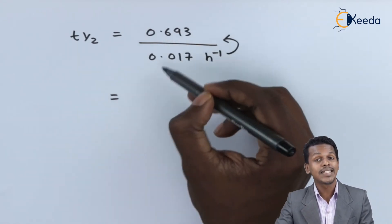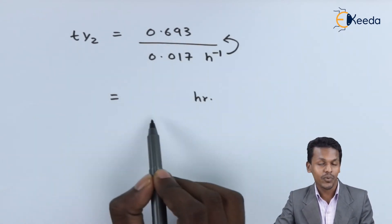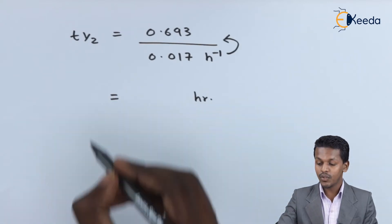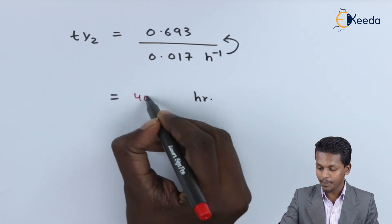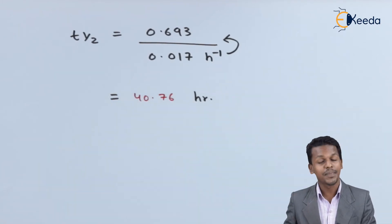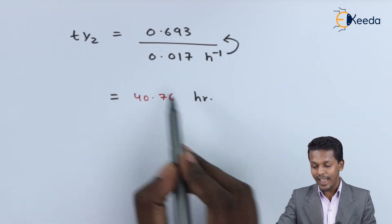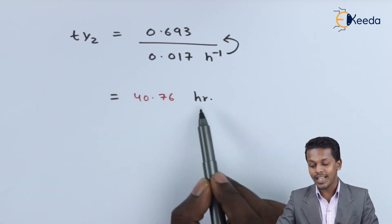Let me calculate this and show you what value we get. We have got the value of half-life as 40.76 hours.